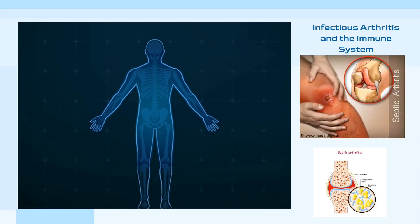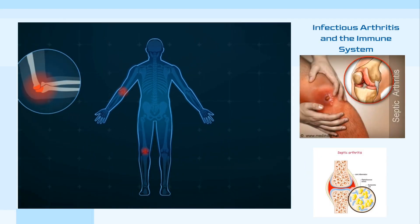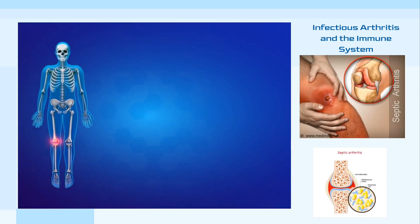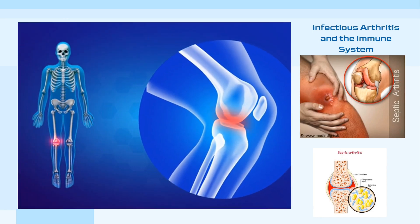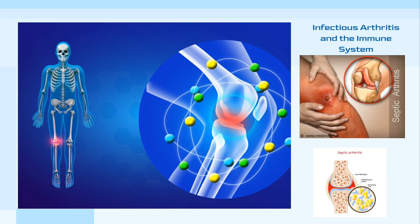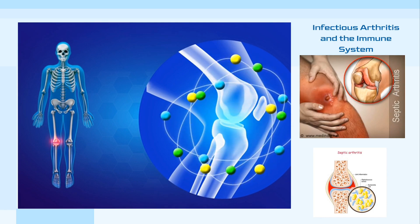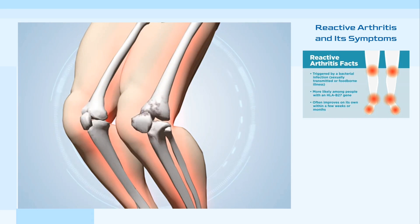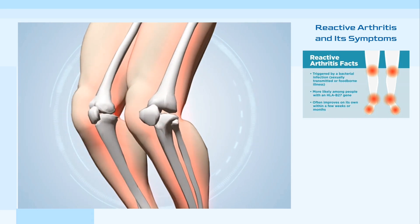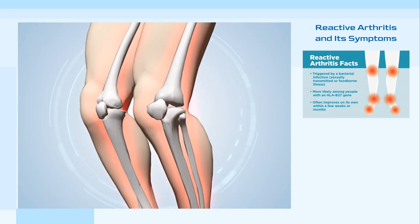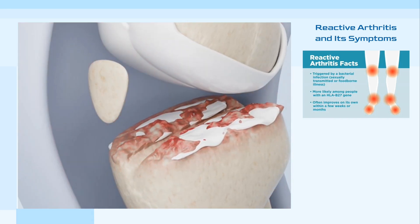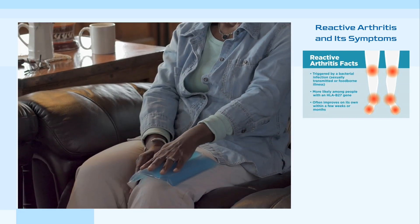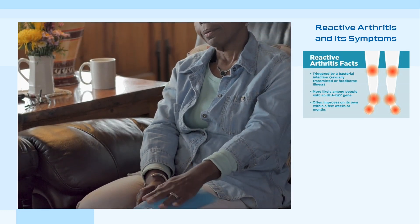Infectious arthritis is triggered by bacterial, viral, or fungal infections, causing the immune system to simultaneously attack the infection in joints, leading to swelling and joint damage. Reactive arthritis is the body's response to an infection elsewhere in the body, often following salmonella or chlamydia infections. It typically causes lower body and spine arthritis, resulting in redness, swelling, and pain in the affected joints.